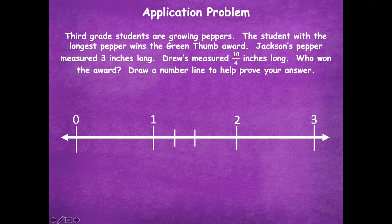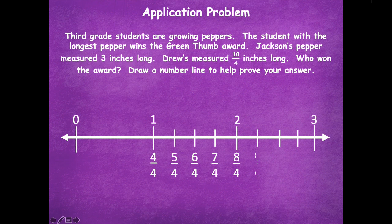If you split up from zero to one, you're not wrong — that's absolutely fine to do. Between one and two I'm going to split up into fourths, which means you need three lines. And from two to three, you would also need three lines to split it into fourths. Once you do that, now you're ready to label them. My one whole we know is four-fourths, then I count up: four-fourths, five-fourths, six-fourths, seven-fourths, eight-fourths, nine-fourths, ten-fourths, eleven-fourths.